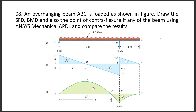We have one overhanging beam of span 4 meters, supported at the left hand side. Another support is at a distance of 3 meters, and it is subjected to a uniformly distributed load of 4.5 kN per meter. We need to find the shear force and bending moment diagram, and also the point of contraflexure — where the bending moment changes sign — and compare with theoretical results.